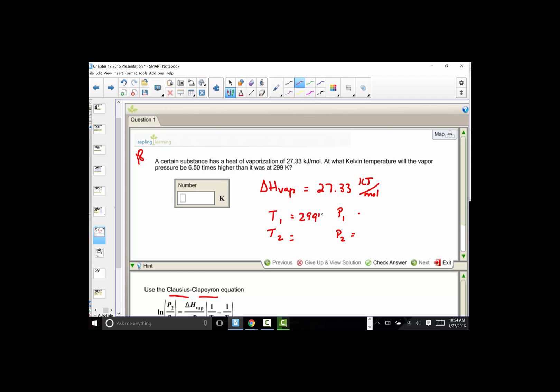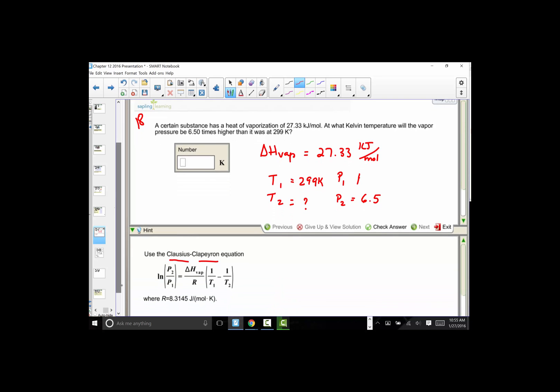So looking for a new temperature when, let's just suppose I had one atmosphere or whatever the pressure unit wanted to be, and now at the second pressure it's 6.5 times larger. We have all of the information provided to us except for the second temperature.